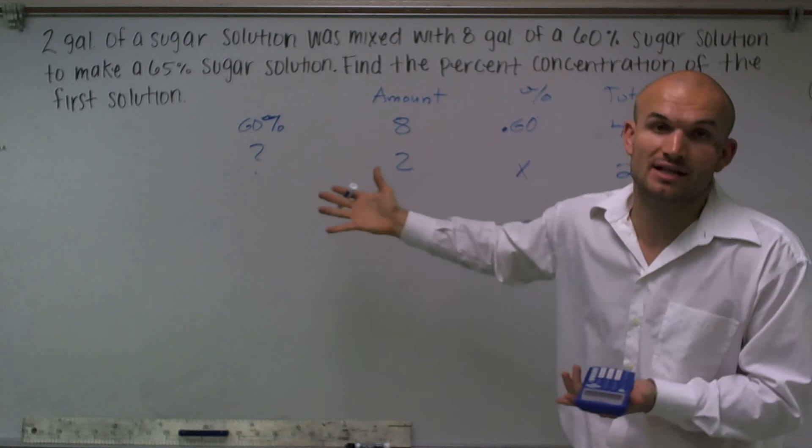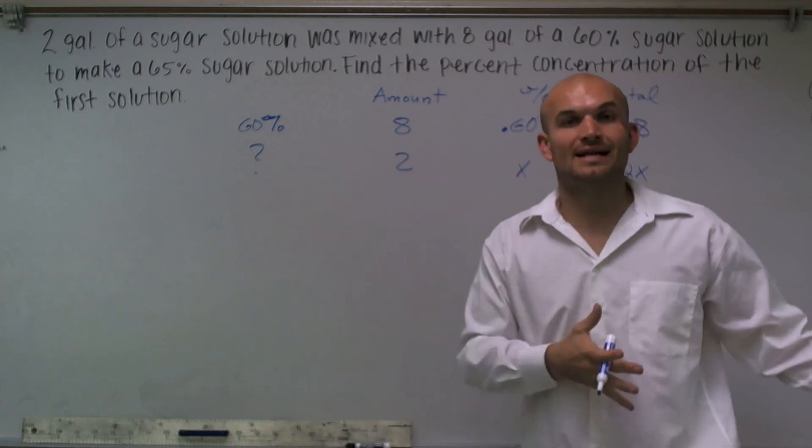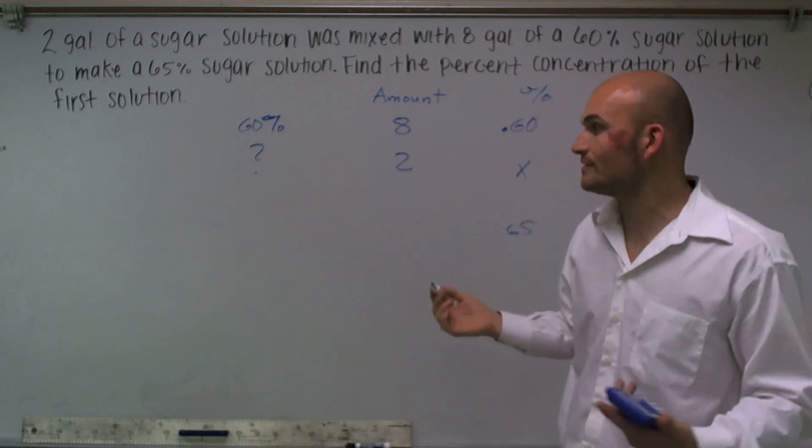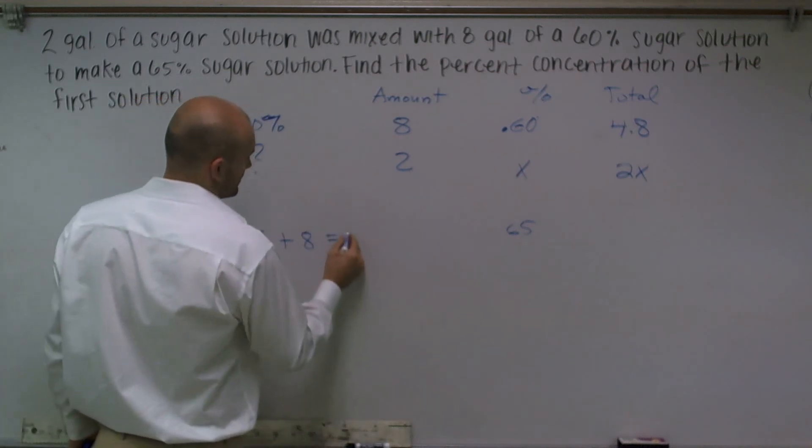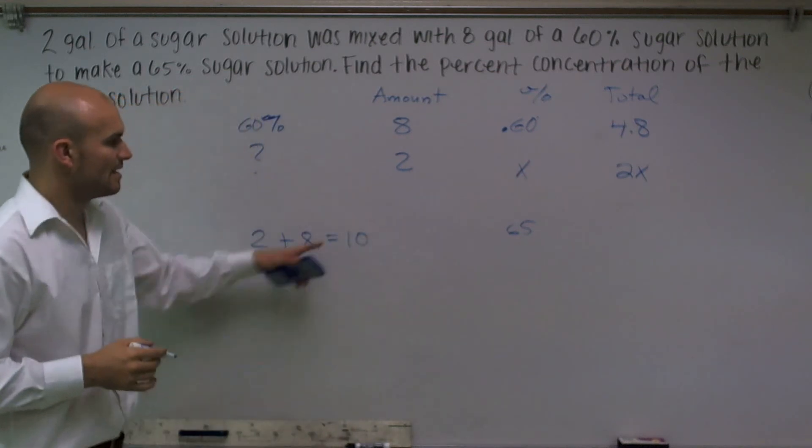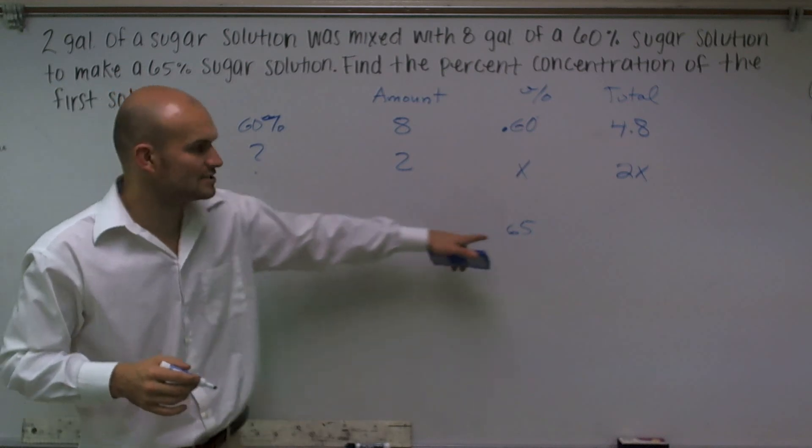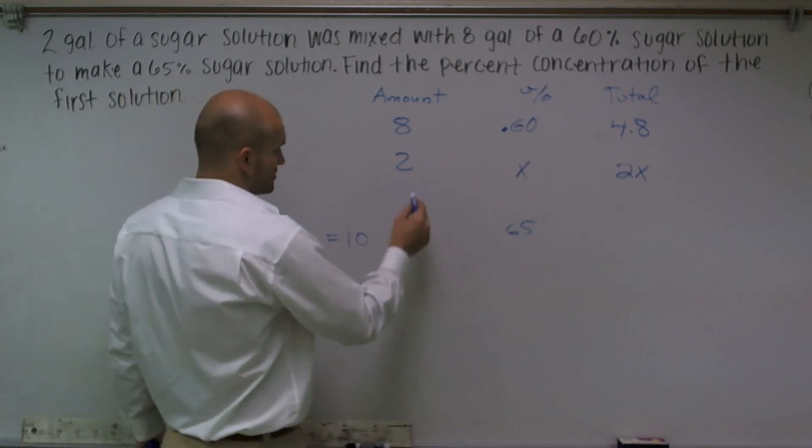We're combining two gallons of one mixture and then adding it with another eight gallons of another. So we're having a total of two plus eight equals ten gallons. And we want the gallons to be at a concentration of 65%.